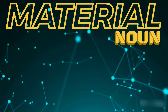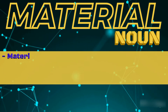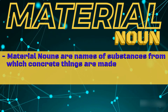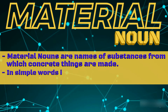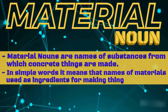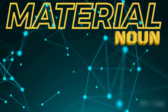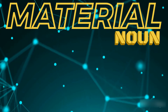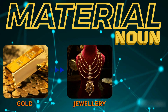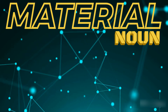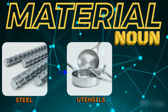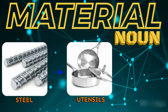What is a material noun? Material nouns are names of substances from which concrete things are made. In simple words, it means names of materials used as ingredients for making things. For example, gold is used for making jewelry, wood is used for making furniture, and steel is used to make utensils.